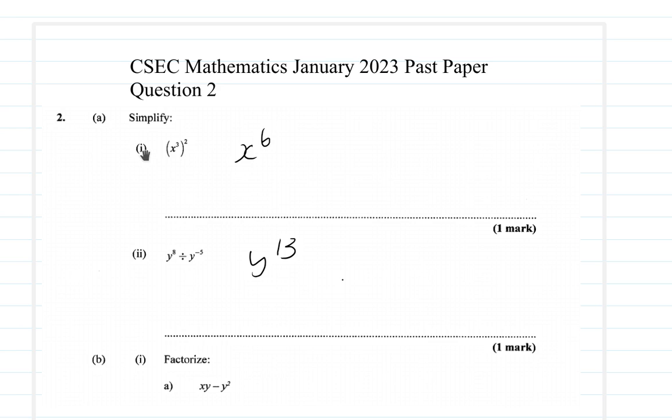So for part A1, where you have the x cubed squared, the answer should be x to the 6th. Let's see how I would have got these answers. Make sure you understand how I obtained these answers. Try to get them on your own before you watch the videos.